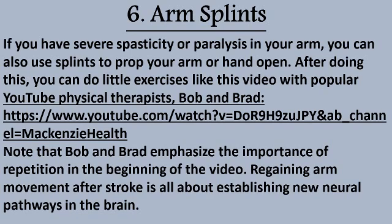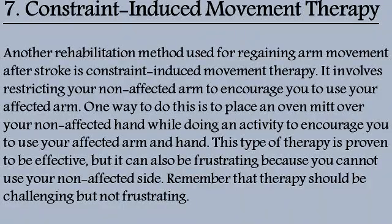Method 6: Arm Splints. If you have severe spasticity or paralysis in your arm, you can use splints to prop your arm or hand open. After doing this, you can do little exercises — such as those demonstrated by popular YouTube physical therapists Bob and Brad — who emphasize the importance of repetition. Regaining arm movement after stroke is all about establishing new neural pathways in the brain.